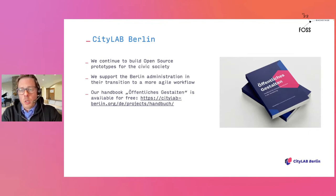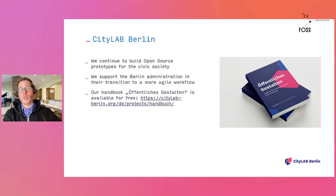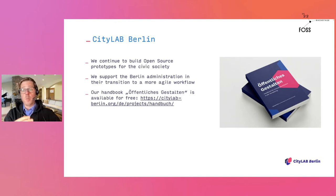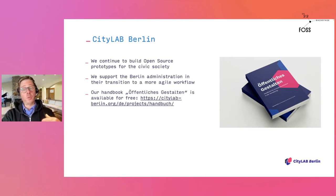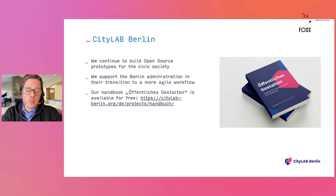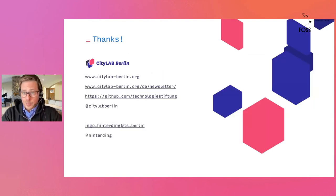As for the City Lab Berlin, we will continue to build open source prototypes for civic society and the public administration and support them in their transition to a more agile workflow. If you are working in public administration and are interested in learning methods to become more agile and innovative, check out our free handbook Öffentliches Gestalten, which provides useful exercises and practical examples. It can be ordered for free or downloaded from our website. I'd be happy to hear from you and your ideas on how to pull request your government — thank you very much.